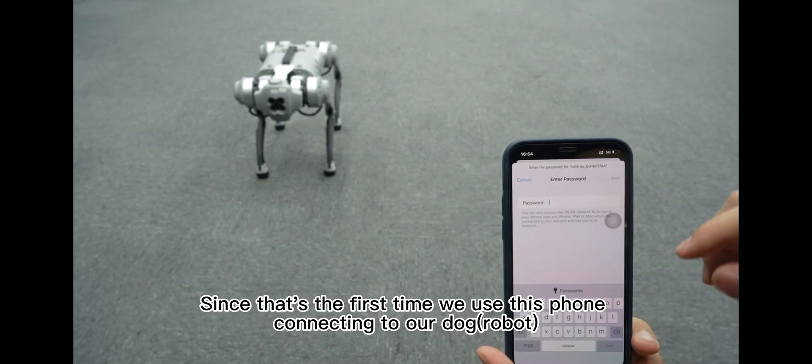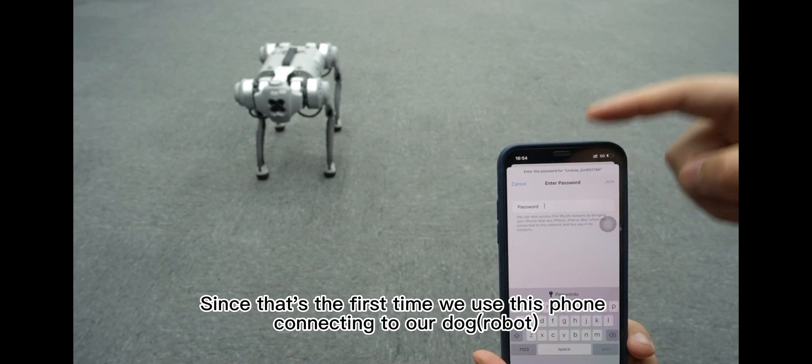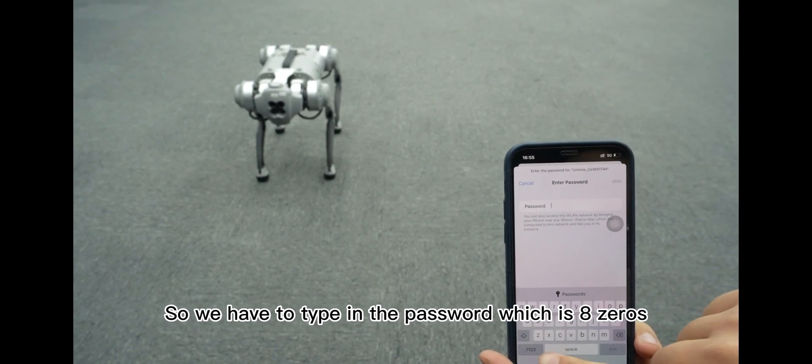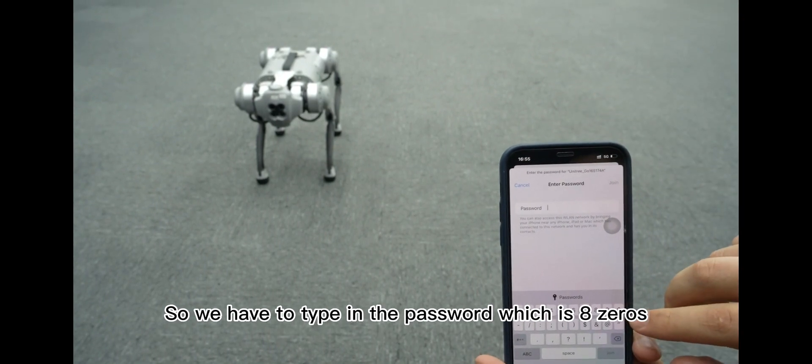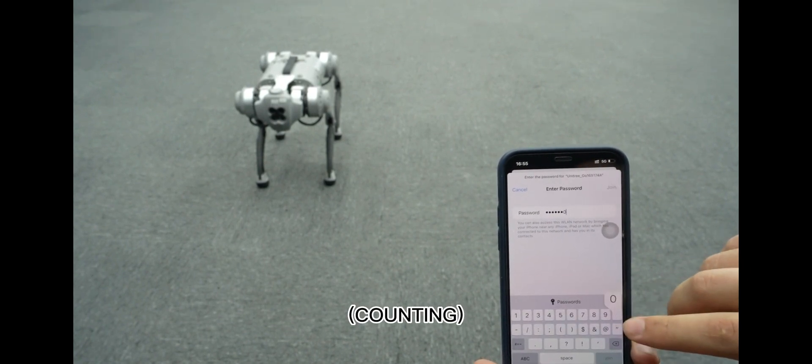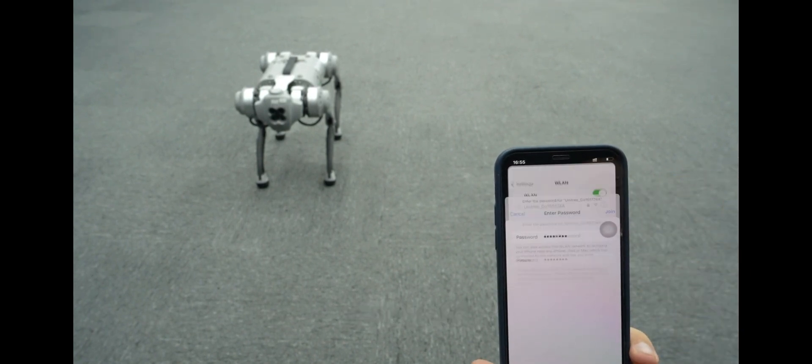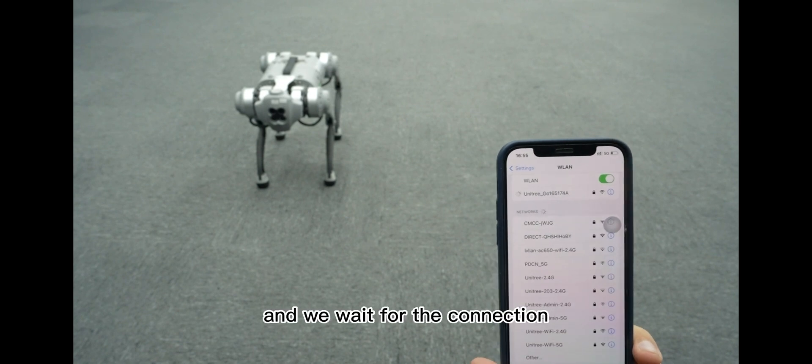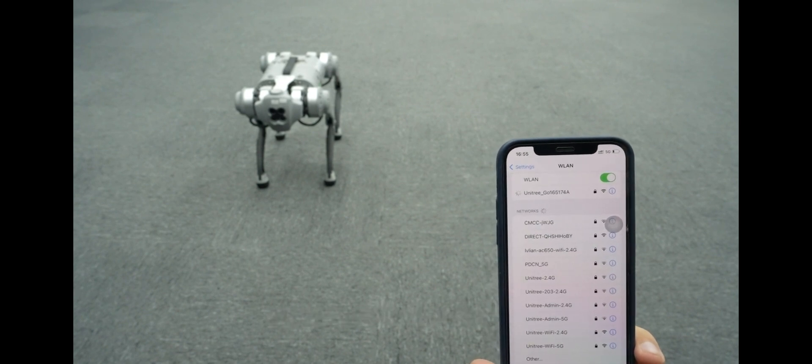Since that's the first time we've used this phone connecting to our dog, so we have to type in the password, which is 8012345678, join, and we wait for the connection. There we go.